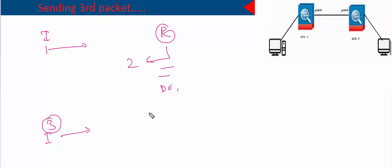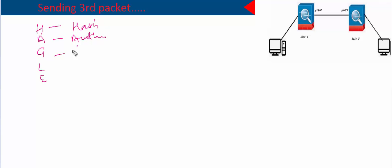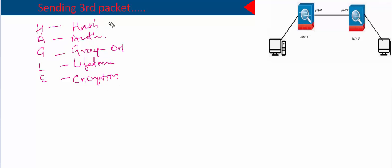The third packet is sent from the initiator again, but before sending it, the initiator has to do some preparation — it has to create some values. What things are required in the third packet, and how does it calculate them? If you remember, in the first and second packets they negotiated five items — the HAGGLE items — which stands for Hash, Authentication, Group (Diffie-Hellman group), Lifetime, and Encryption.